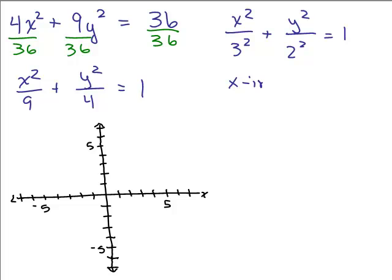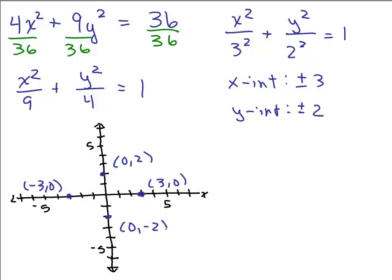So the x intercepts will be plus or minus 3. The y intercepts are at plus or minus 2. So let's graph it. We've got 3, 0. That's one of the vertices. And negative 3, 0 is another vertex. And we've got 0, 2. And we've got 0, negative 2.